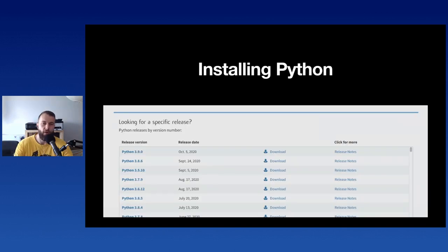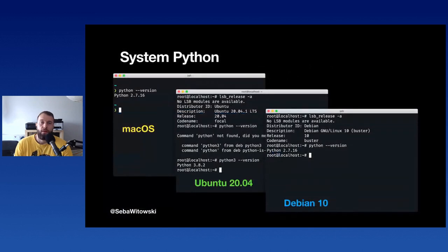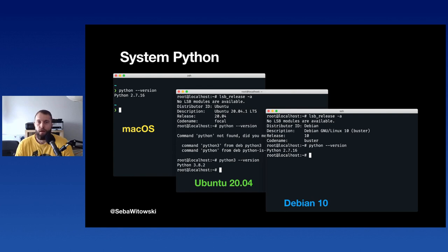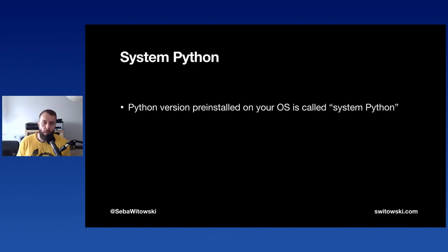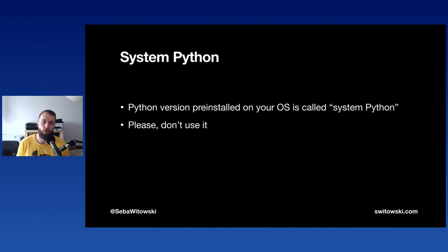Let's talk about installing Python. Depending on your operating system, your computer might already come with some version of Python. On macOS it comes with Python 2.7, on Linux the version depends on your distribution, and on Windows 10 there's no Python installed. This pre-installed version is often called the system Python, and no matter what version you have, I strongly suggest you don't use it — in many cases it's terribly outdated.